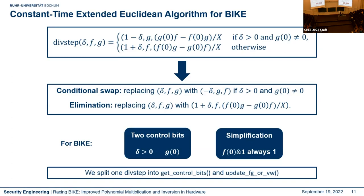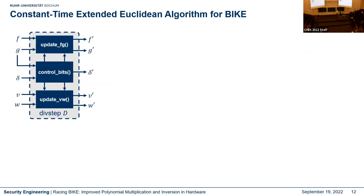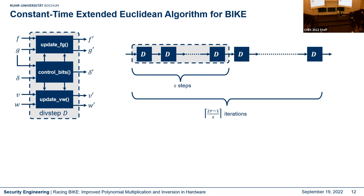We split the divstep into two functions: get_control_bits and update_fg_vw. The polynomials f and g are initialized with x^r - 1 and h0; v and w are initialized with 1 and 0; the degree difference starts at 1. We compute control bits from g and delta, then perform many divsteps. We introduced a step size parameter s, allowing s divsteps per iteration, so we need (2*(r-1))/s iterations for the entire inversion.